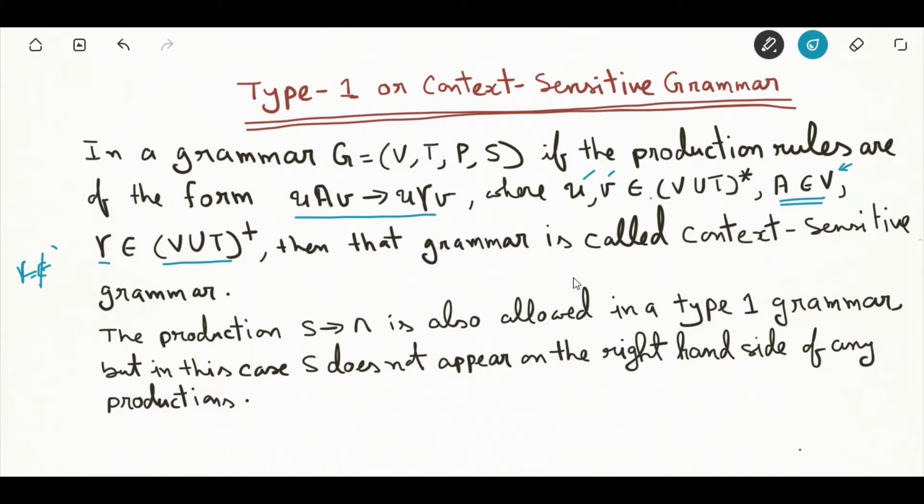This is not going to happen. So if in any grammar G equals VTPS the production rules are of this form and this is called as Type 1 production, then that grammar is called context-sensitive grammar.